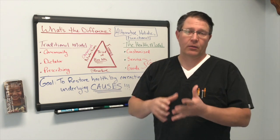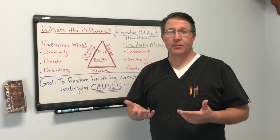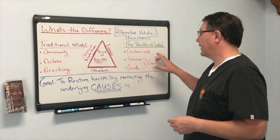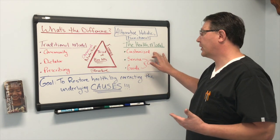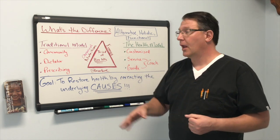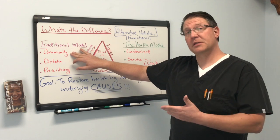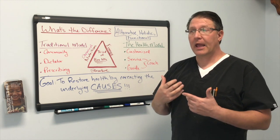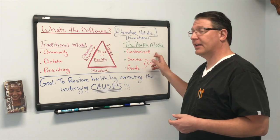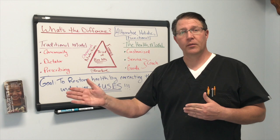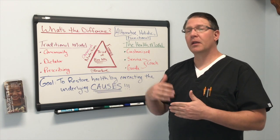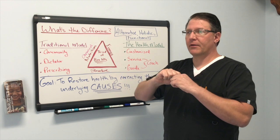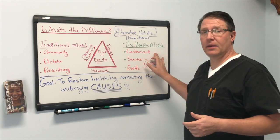The problem is that many times the treatments, procedures, and protocols designed for the community aren't really specific to anyone — they're based on the group. Conversely, in the alternative or holistic model, we're looking at customizing care for that person. We've had a number of people who have been to their primaries and are told their thyroid is normal. But when we come in and do more specific tests and customize the protocols for that person, we actually find out their thyroid is not normal — maybe going in the direction of autoimmune, or there's an undiagnosed thyroid or endocrine issue that needs to be addressed.